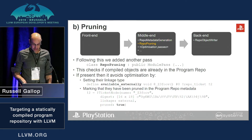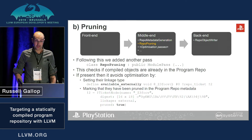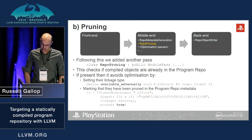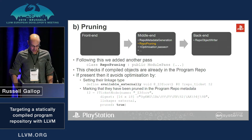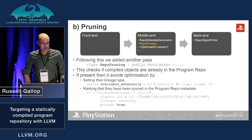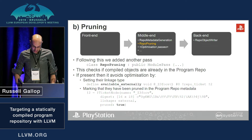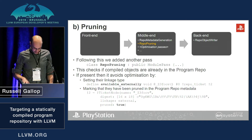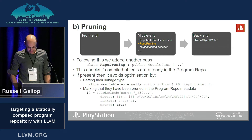Following that, we added a pruning pass. This checks if the compiled object is already in the program repo using the digest. If it's present, then it avoids running any optimization passes by setting the linkage type to available externally and marking it as pruned in the metadata.